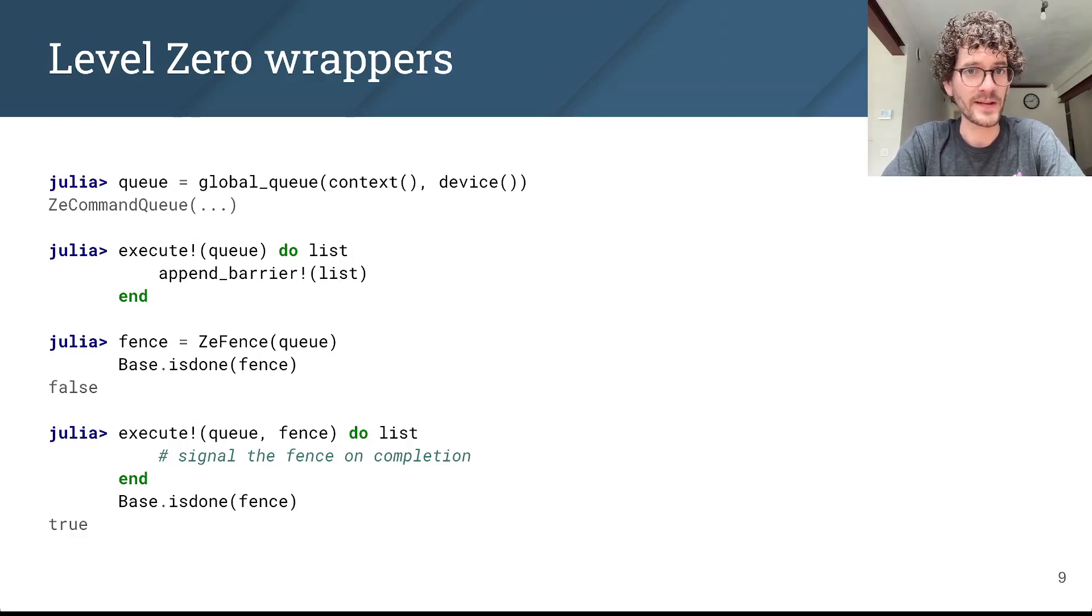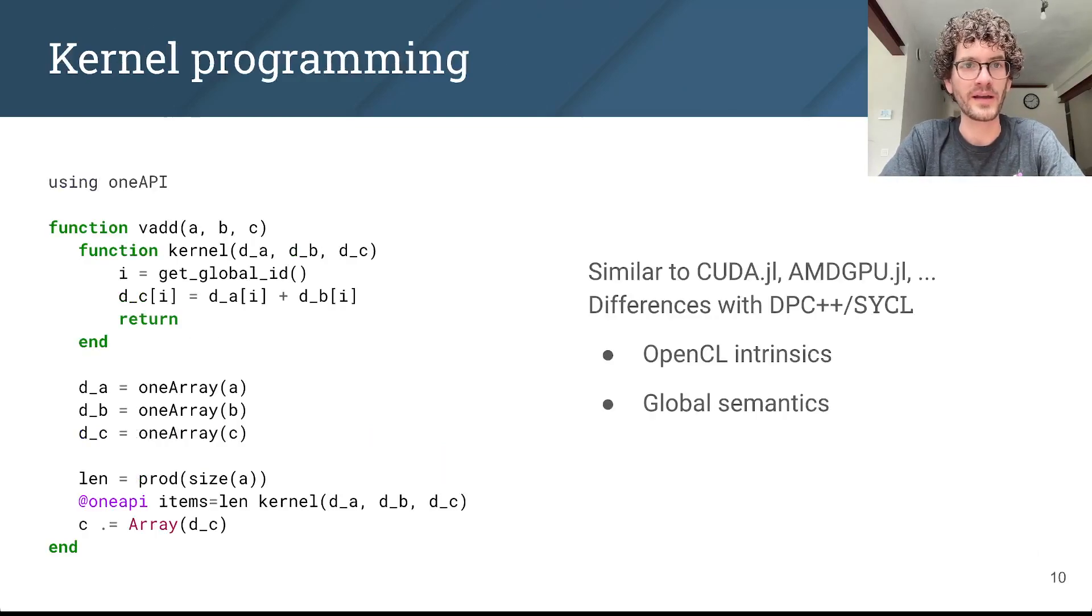Still, these wrappers are pretty low-level and most users won't have to use these capabilities. But we use them to build the other abstractions like the kernel programming interface. If you need to implement a custom kernel, you can use these interfaces.